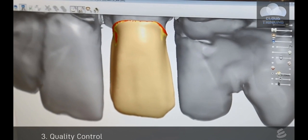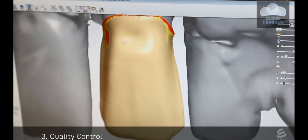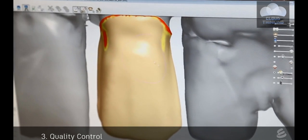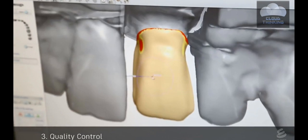This digital mesh is sent to a second technician who performs quality control. This is similar to the previous step, but this technician is more experienced and makes sure that the shape of the tooth looks natural.